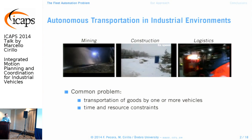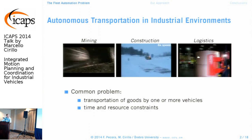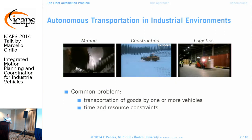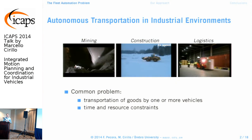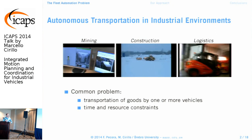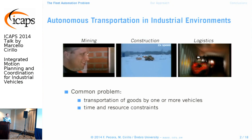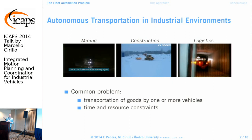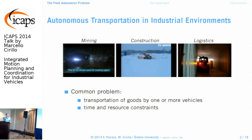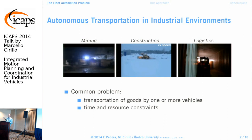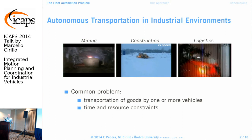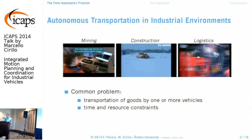These application domains are very different, but we could elicit some common problem underneath them all. They all need to transport goods from one place to the next, done by one or more vehicles, and all these problems have constraints on time and resources — for example, wanting the warehouse sorted in a specific time or the asphalt production to proceed at a specific rate.